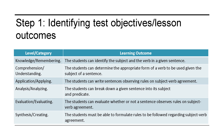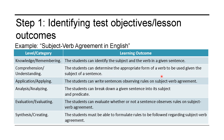In this table, we are shown the original Bloom's taxonomy and the revised Bloom's taxonomy. For knowledge and remembering, the learning outcome can be: the students can identify the subject and the verb in a given sentence. For comprehension and understanding, we can have: the students can determine the appropriate form of a verb to be used given the subject of a sentence. For application or applying, the students can write sentences observing rules on subject-verb agreement.